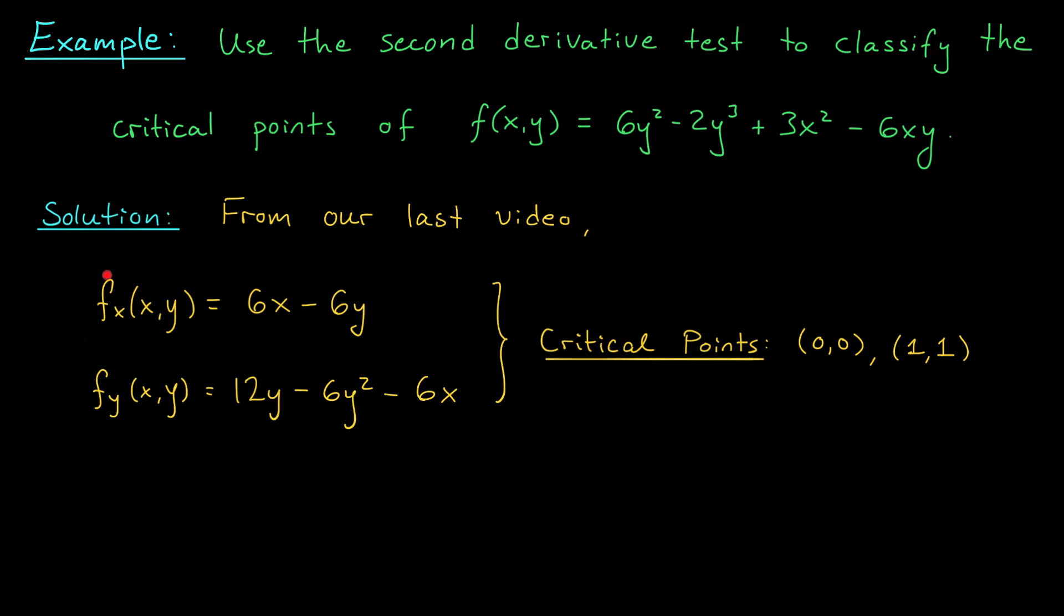We took the partial derivatives with respect to x and y. We noted that these derivatives exist everywhere, so we figured out where they were both equal to zero, and we got two points, (0,0) and (1,1).